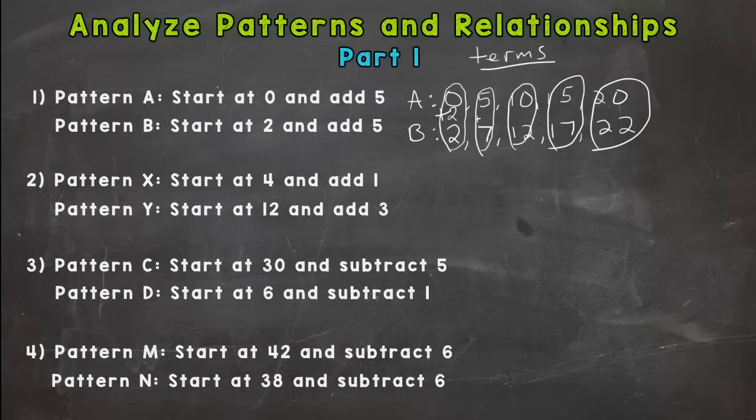5 plus 2 is 7. Works. 10 plus 2 is 12. 15 plus 2 is 17. 20 plus 2 is 22. It worked for all five of those. So pretty safe to say here that the rule or relationship is adding 2 to pattern A will give us the corresponding terms in pattern B.